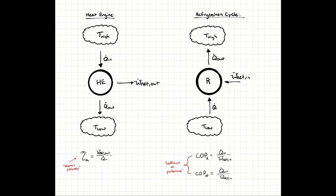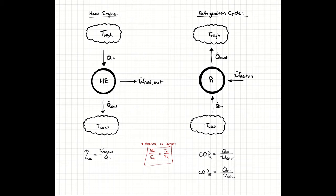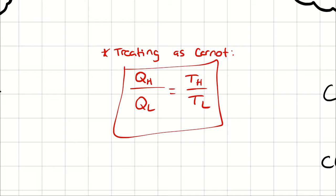The two most common thermodynamic cycles are the heat engine, which taps into naturally occurring heat transfer to produce net power, and a refrigeration cycle, where we pay work to move heat in a direction it would not naturally want to go. Another useful parameter is the theoretical maximum thermal efficiency or coefficient of performance. When considering the best case scenario, we treat everything as ideal — the Carnot cycle. In a Carnot cycle, we substitute the relative proportion of heat transfer for the relative proportion of temperatures driving the heat transfer.